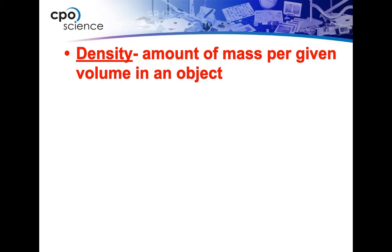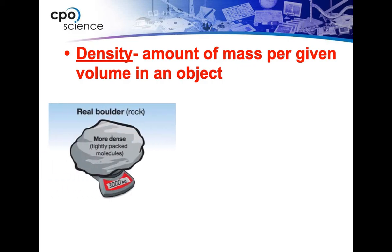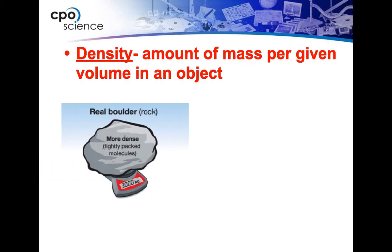Density is the amount of mass per given volume in an object. Two of those things that make up density — mass and volume — we've actually already talked about. Think about what that means: how much mass is in a given volume of an object. The more mass you have in a given volume, the greater density that you're going to have.